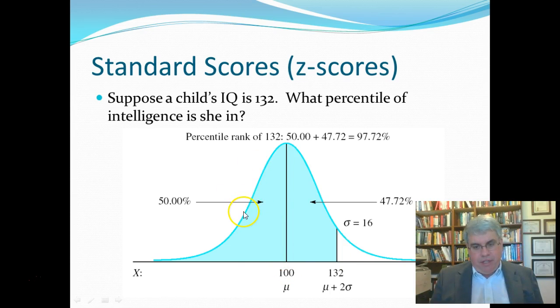And we add up the two segments between 100 and 132, and that comes up to 47.72%. We add those two numbers together, and that comes up to the 97.72%. So, we could say that she's in about the 98th percentile, with an IQ of 132.